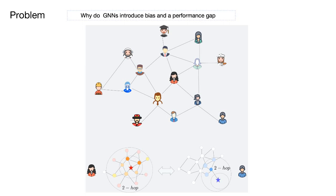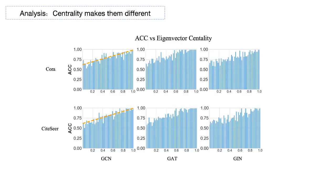Although previous research has revealed the connection between degree centrality and this structural bias, this paper theoretically demonstrates that as the number of layers deepens, the label's influence on nodes is approximately proportional to their eigenvector centrality.